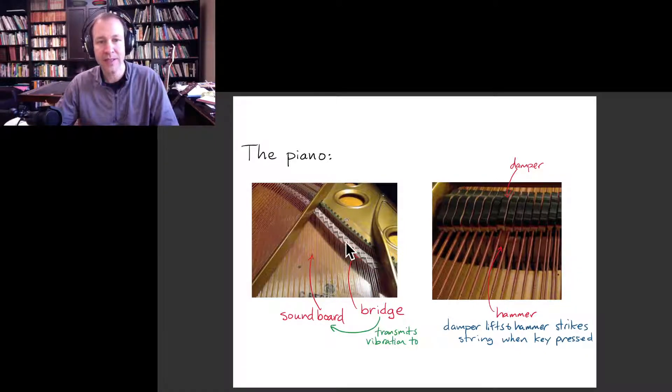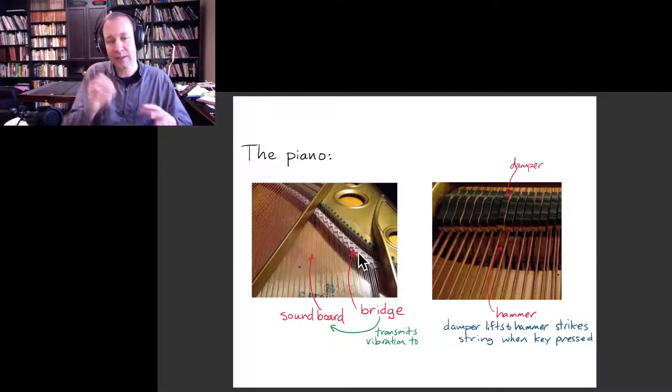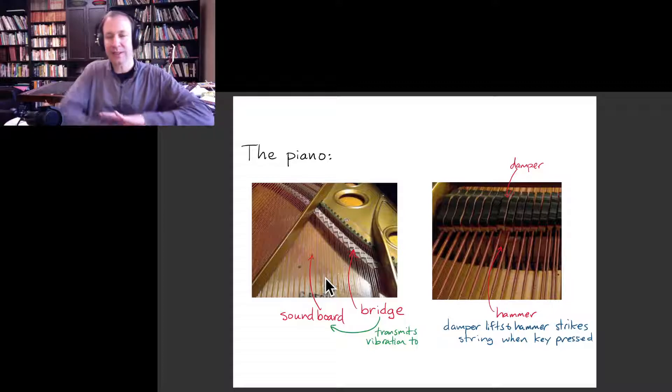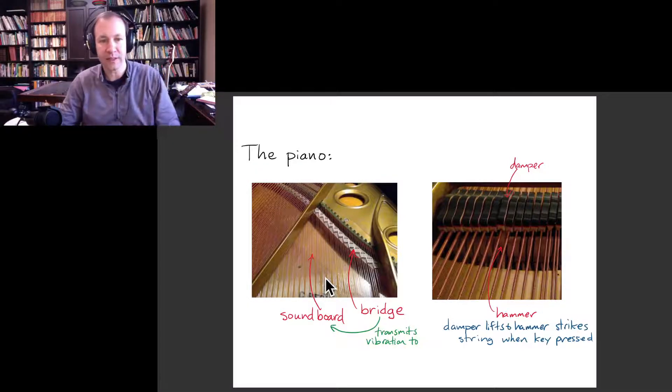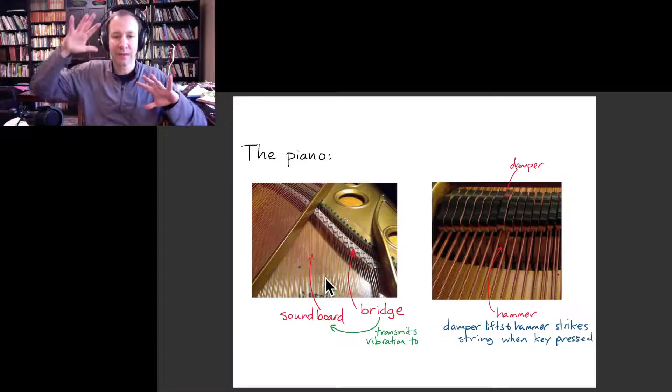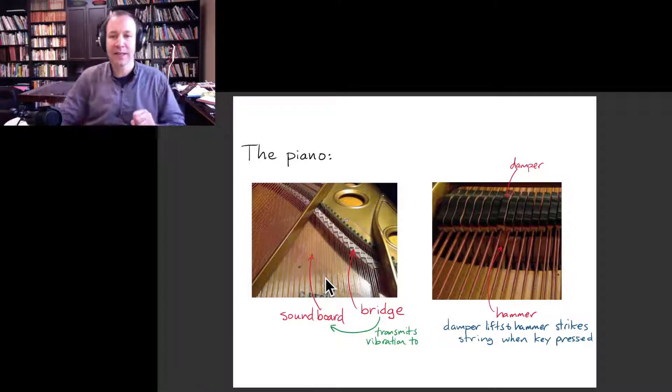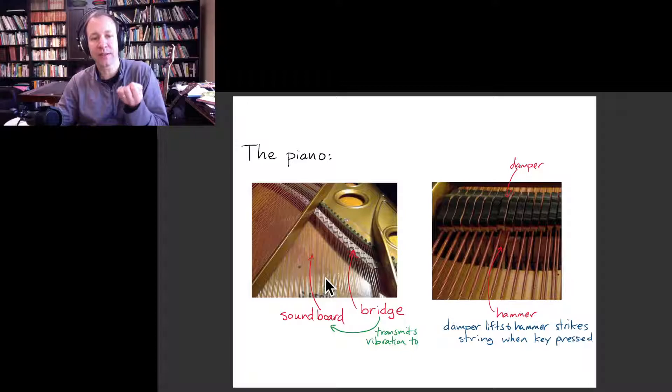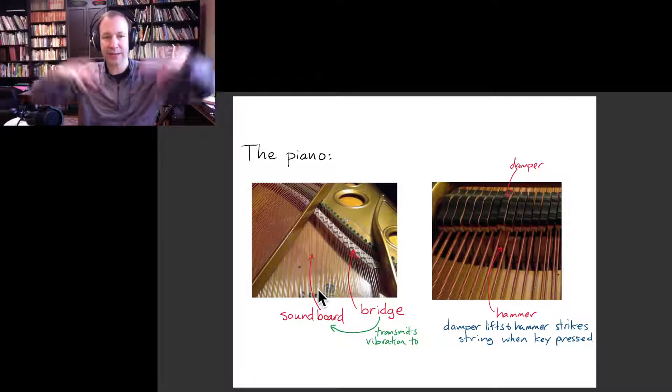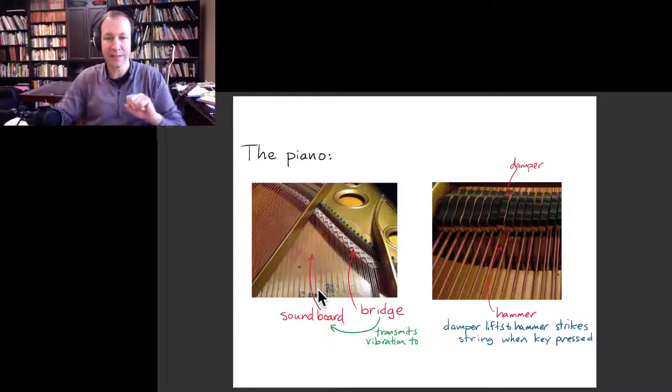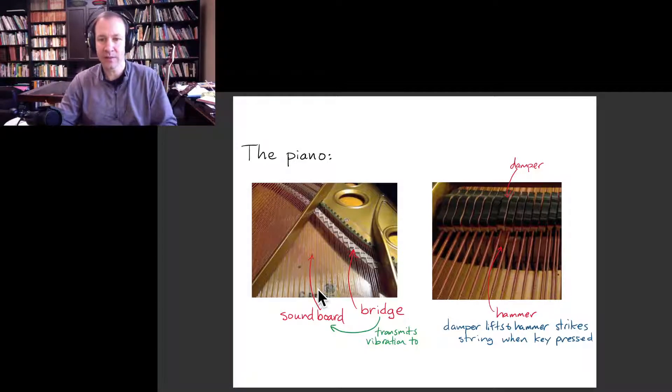And those strings, again, they're attached to a fixed peg on one end and a tuning peg on the other end. And they go over a bridge, which connects the strings to the soundboard, which is just a big plate of wood below the strings. And so that vibrational energy of the strings that you get when the hammer strikes the string is then transferred to the soundboard. And that produces that helps produce the louder sound that we associate with the piano.